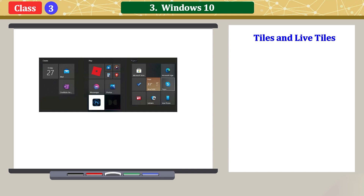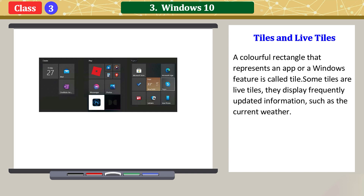Tiles and live tiles: A colorful rectangle that represents an app or a Windows feature is called a tile. Some tiles are live tiles — they display frequently updated information, such as the current weather.